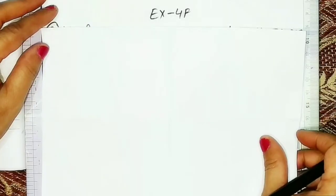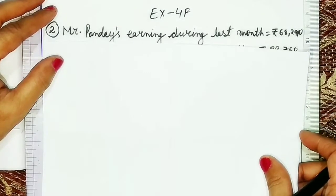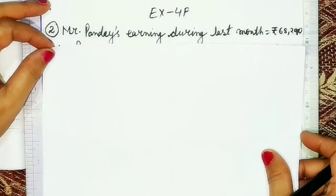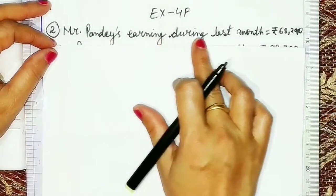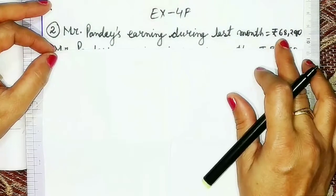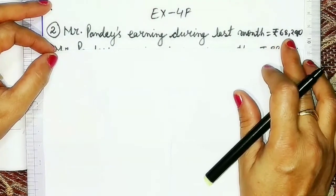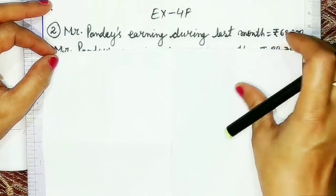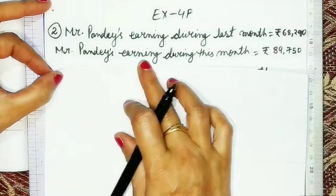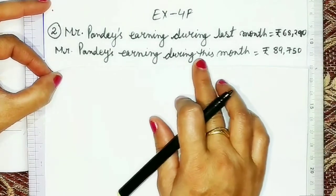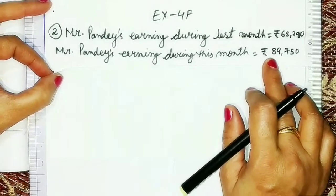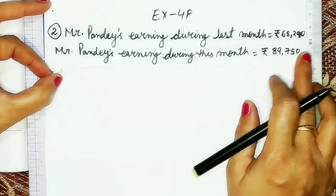Now let us solve question number 2. The first statement will be: Mr. Pandey's earning during last month is equal to Rs. 68,290. The second statement will be: Mr. Pandey's earning during this month is equal to Rs. 89,750.